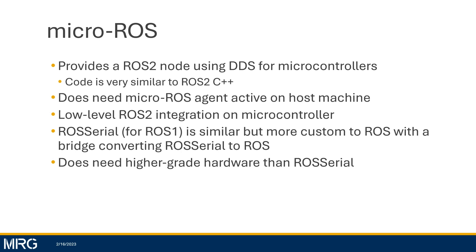ROS1 had its own data distribution bus, but that was specific and custom to ROS1. As a result, the ROS2 C++ interface or library is very similar to the Micro-ROS library itself. Oftentimes you can get example code from the ROS2 C++ examples and, with a little bit of tweaking, get it to work on a microcontroller using Micro-ROS.